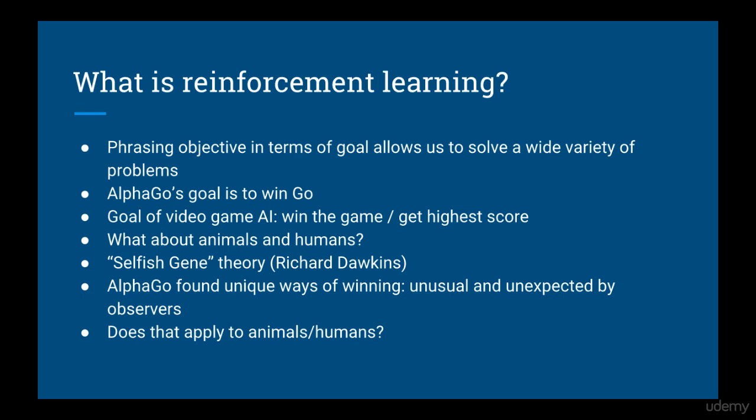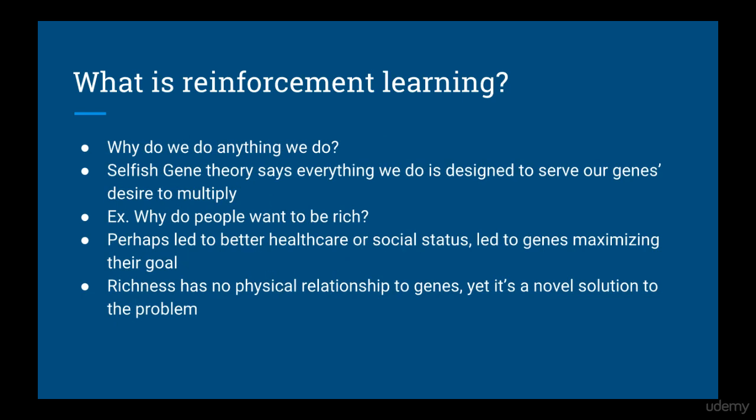Experts commented that AlphaGo used some surprising and unusual techniques. For example, you might have a desire to be rich and make lots of money — but have you ever wondered why you feel that way? Perhaps those with a specific set of genes related to the desire to be rich ended up being more prominent in our gene pool due to natural selection. Perhaps having lots of money led to better health care and social status, which then helped the genes to maximize their central goal, which was to make more of themselves. Although a number in your bank account has no direct relationship in terms of physical laws to how long you are going to live or how much your genes are going to multiply, it's a novel solution to the problem.